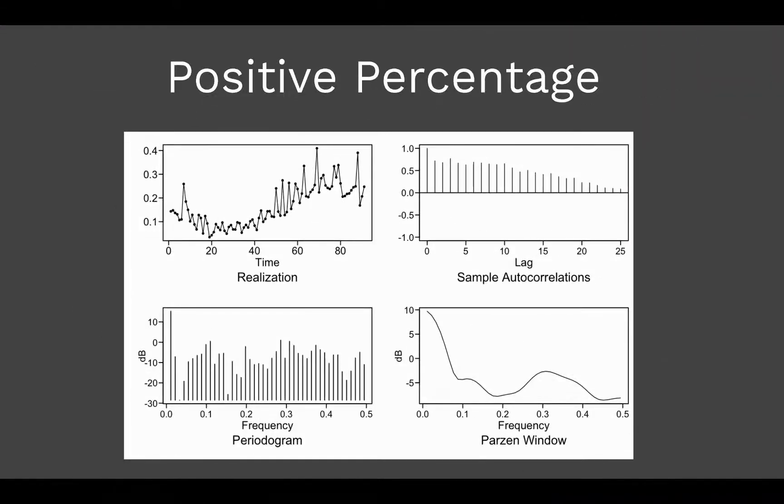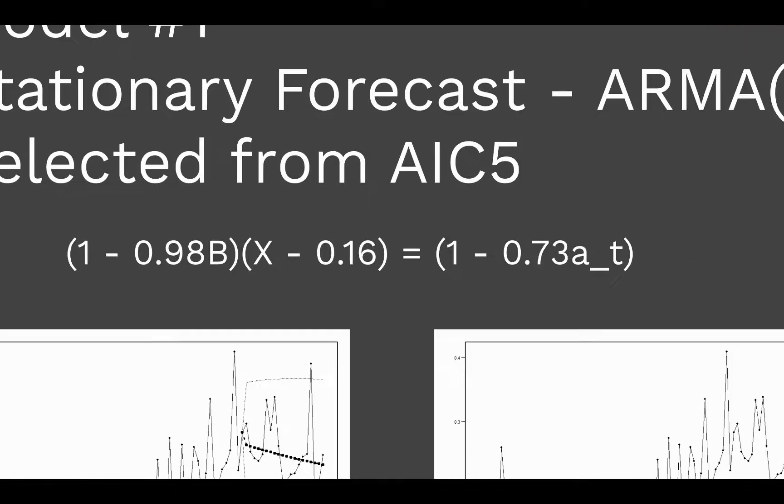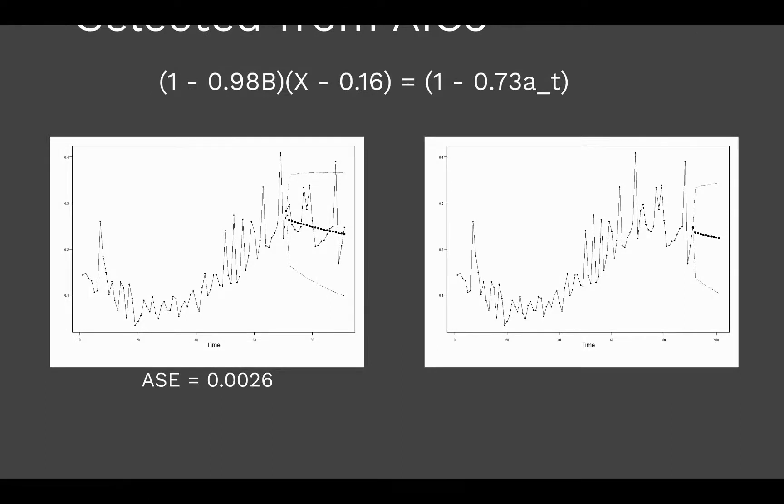So in Arizona we did this exact same methodology. Here's our positive percentage realization as a reminder. Here's our stationary forecast which AIC selected in ARMA 1,1,1 model, here's the model for review. And here's our 20-day look back window using our respective ASE score. We can see it's trending back towards the mean which is interesting.